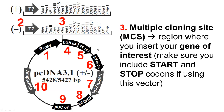Number three is the multiple cloning site, or MCS — probably what you're most familiar with. This is the region where you use your specific restriction enzymes to clone in your gene of interest to express in your cells. Also for this vector, there are no start or stop codons. So if you're using pCDNA 3.1 or any other vector without those, make sure to include your own in-frame start and stop codons with your gene, or else you will not be able to properly translate your messenger RNA.